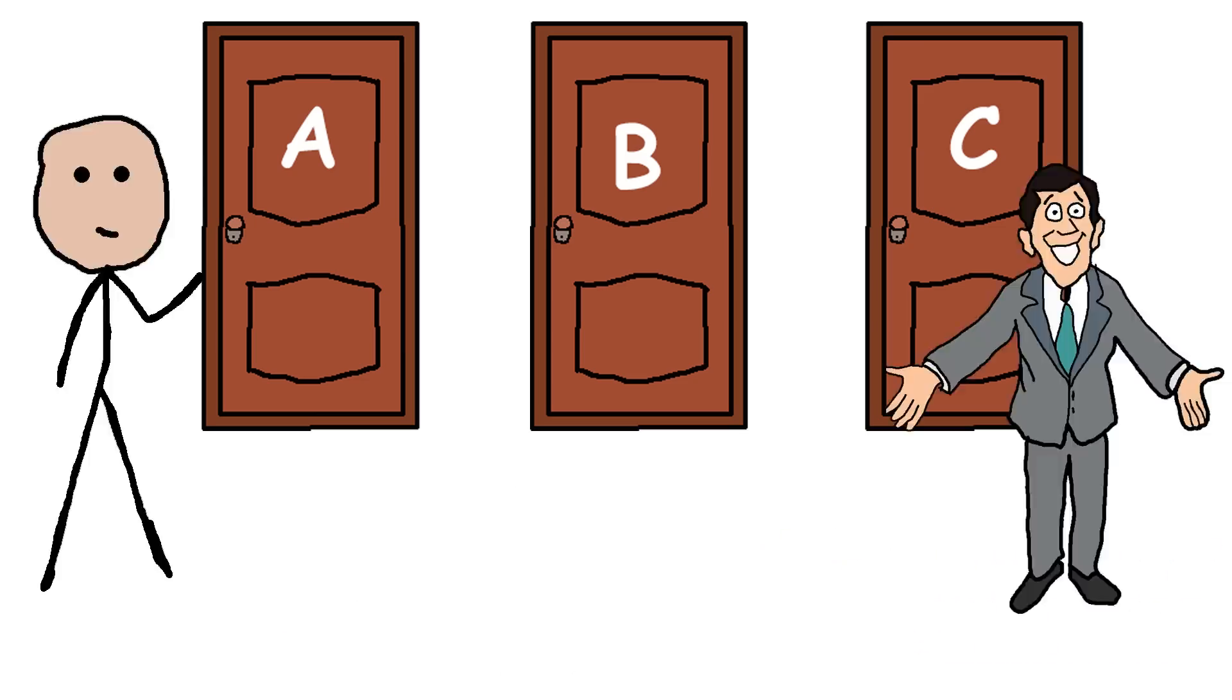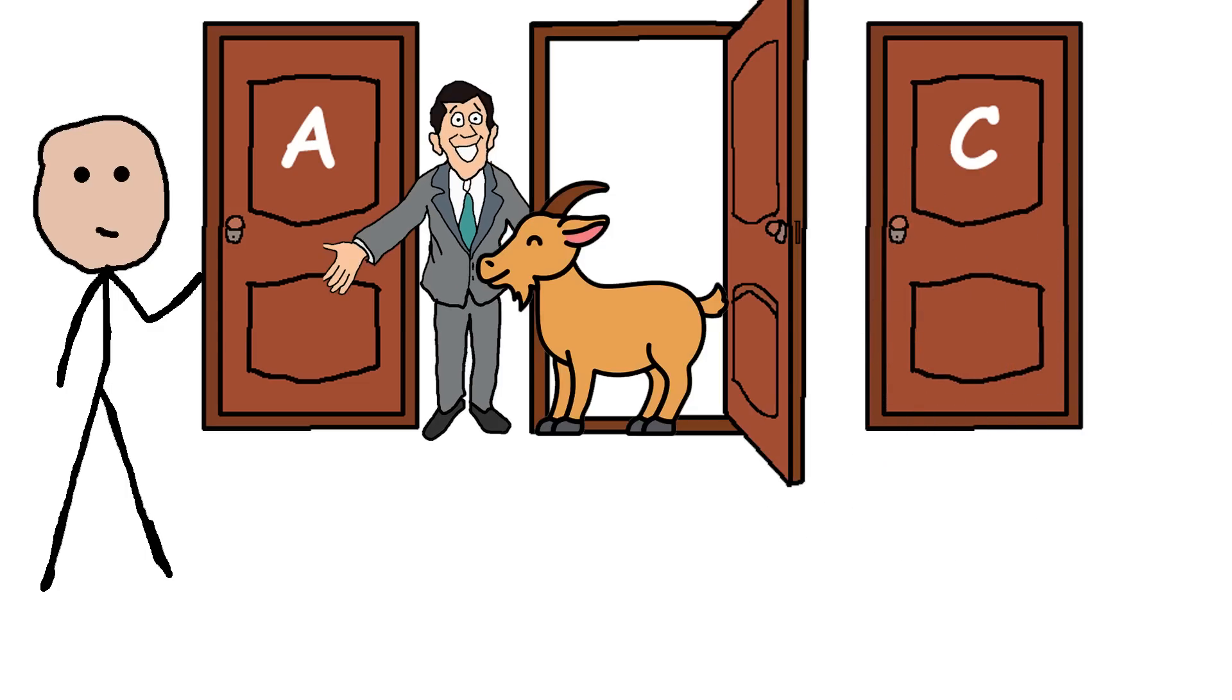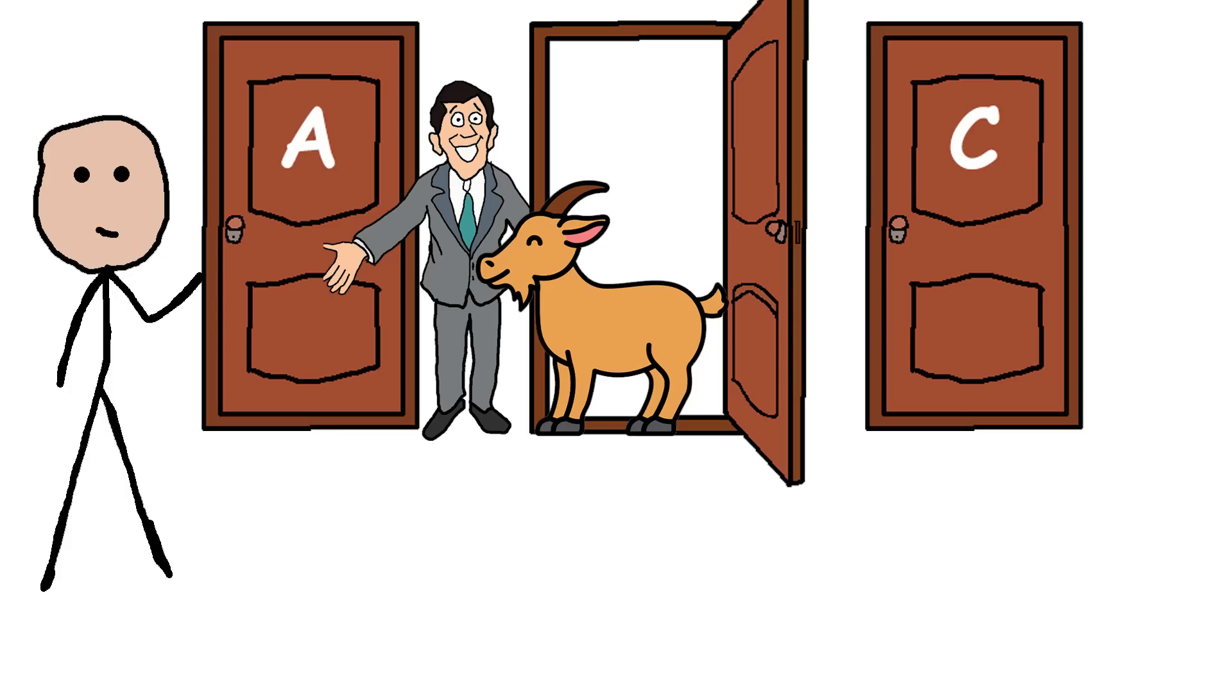Then the host Monty Hall, who knows exactly what's behind each door, opens another door, say door B, revealing a goat. Now, he gives you a choice. Stick with your original choice, door A, or switch to the remaining unopened door, door C.